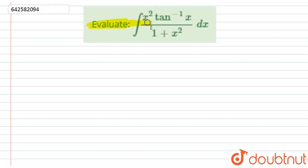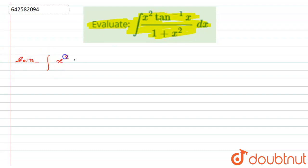Here we have to evaluate the integration of x squared times tan inverse of x, divided by 1 plus x squared, dx. So let us start with the solution. We have the integral: x squared times tan inverse of x, divided by 1 plus x squared, dx.